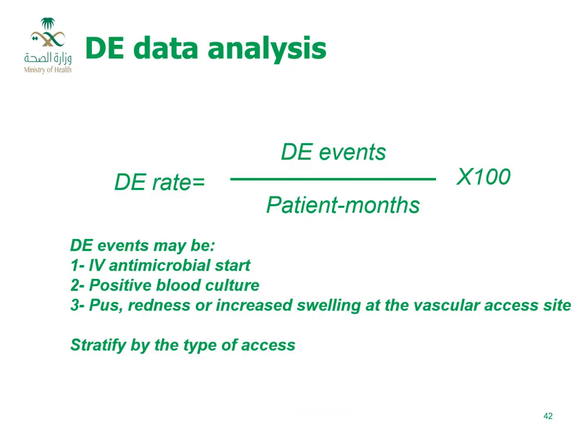To calculate the dialysis event rate, divide the number of dialysis events (numerator) by the patient-months (denominator) and multiply by 100. The rate may be stratified by dialysis event type — IV antimicrobial start, positive blood culture, or pus/redness/swelling — and also by the type of vascular access.